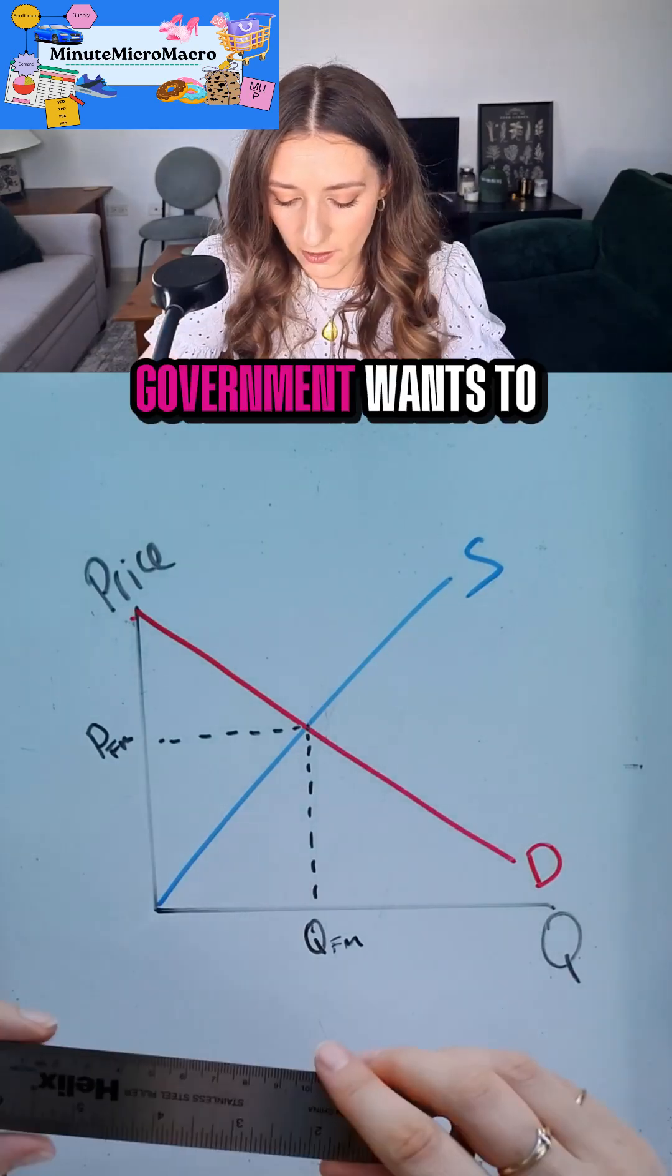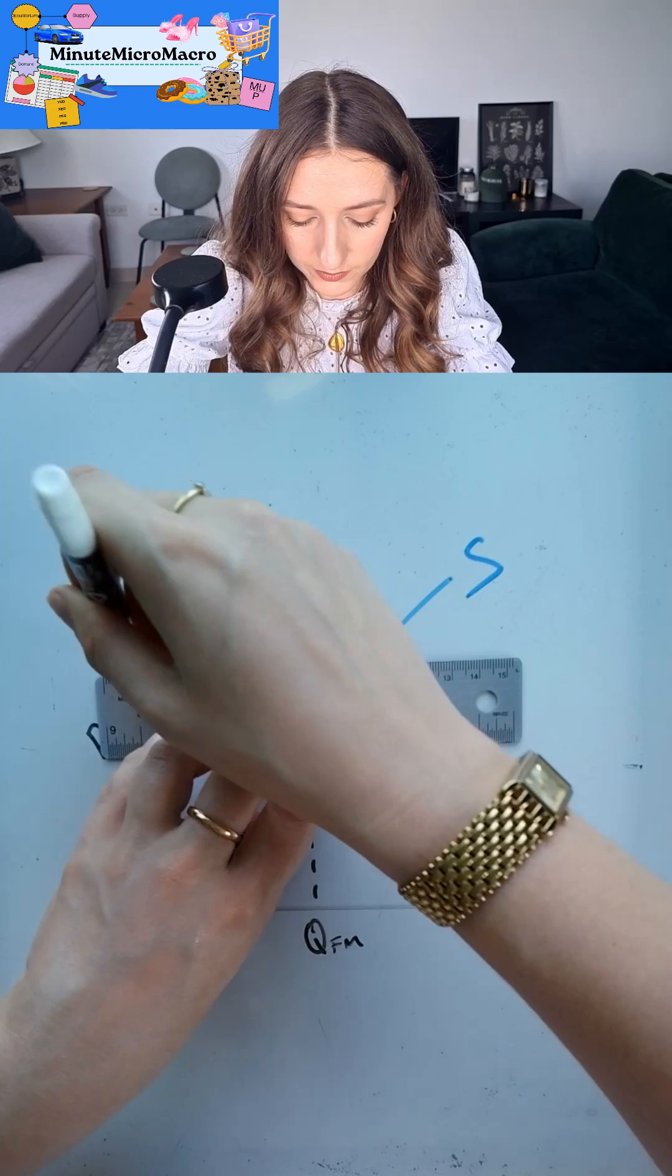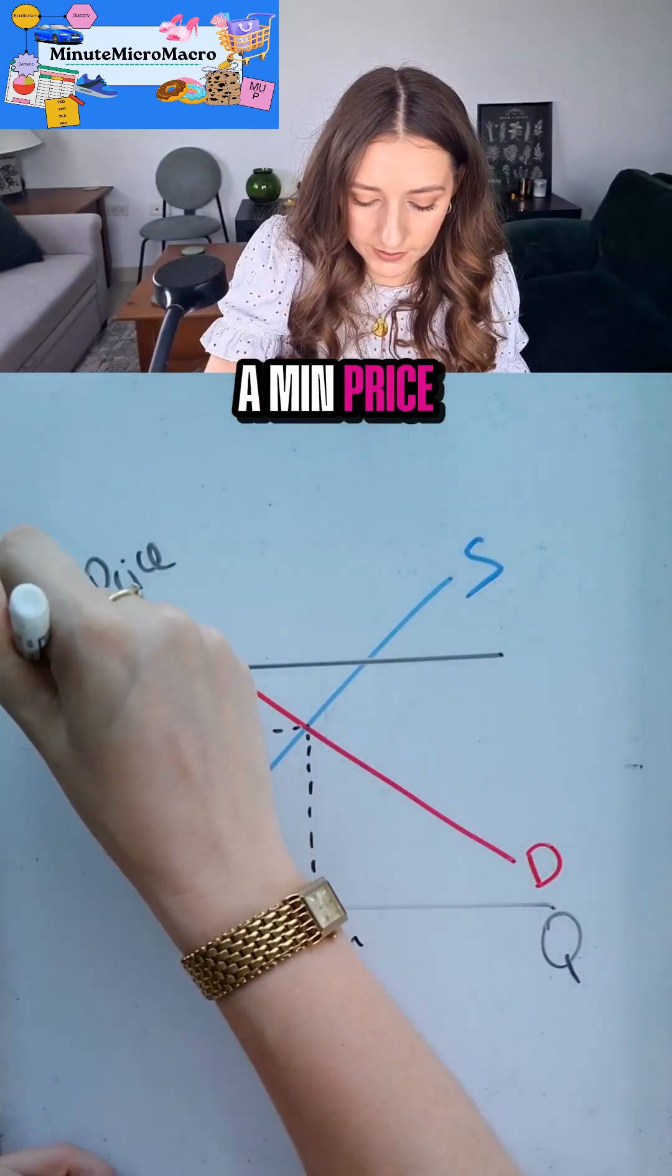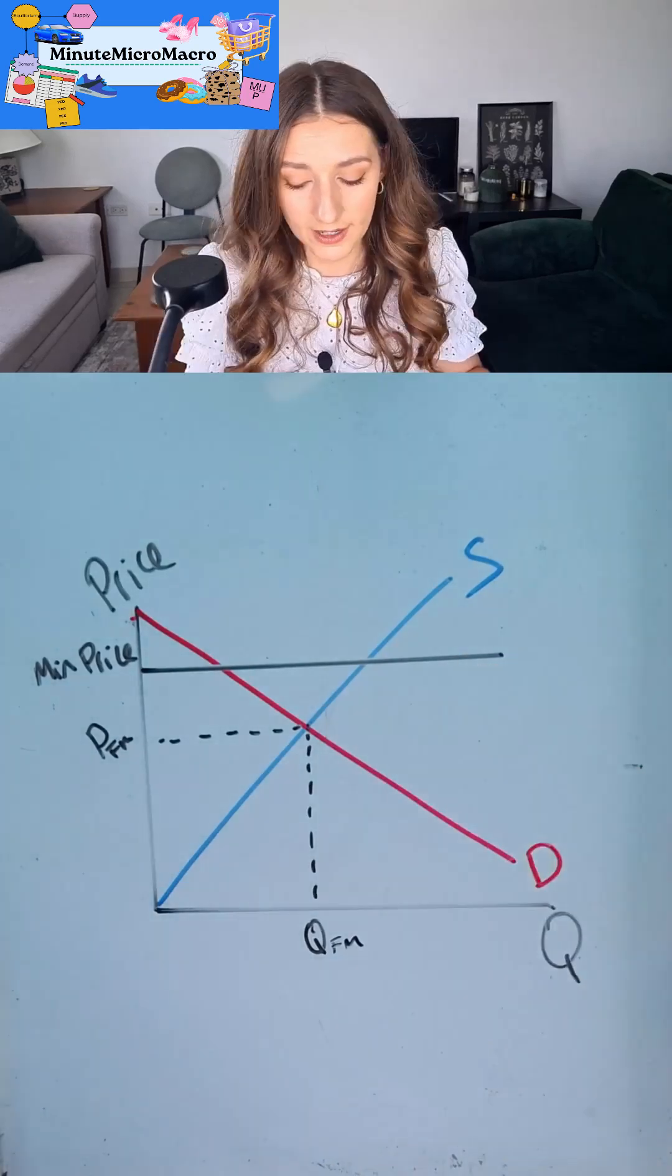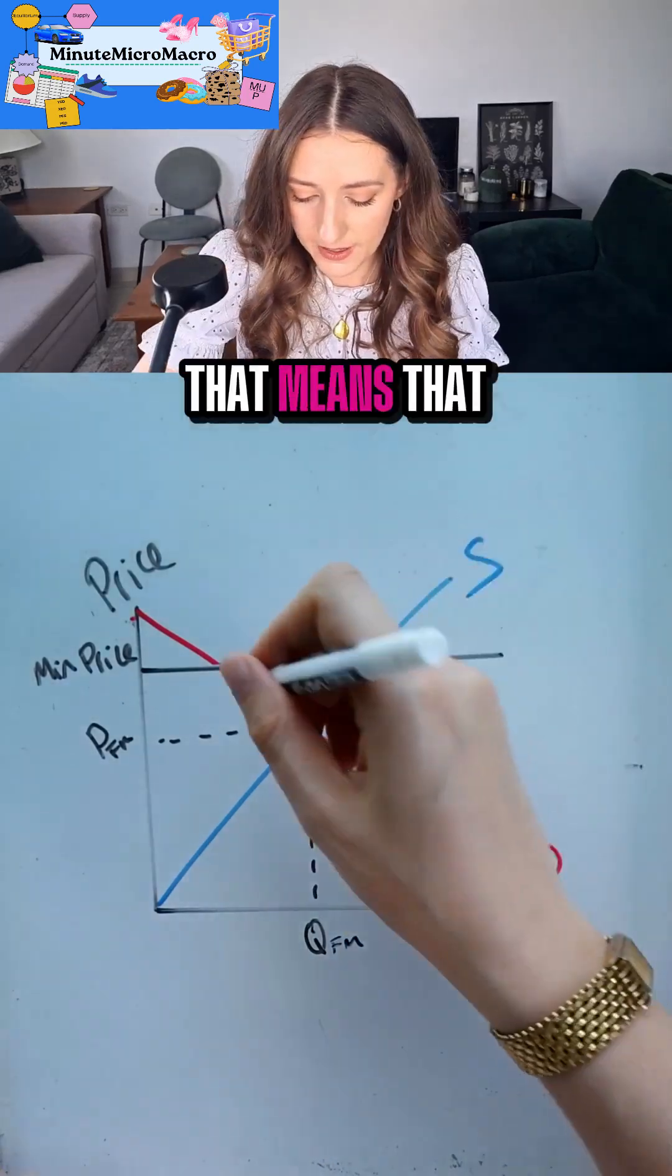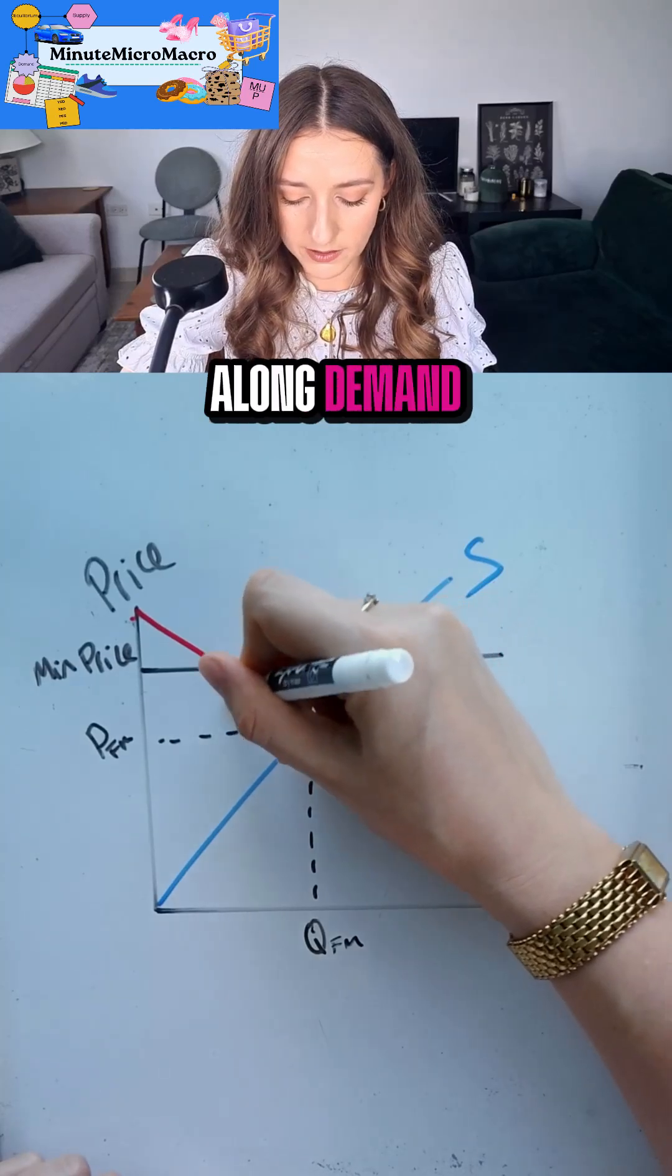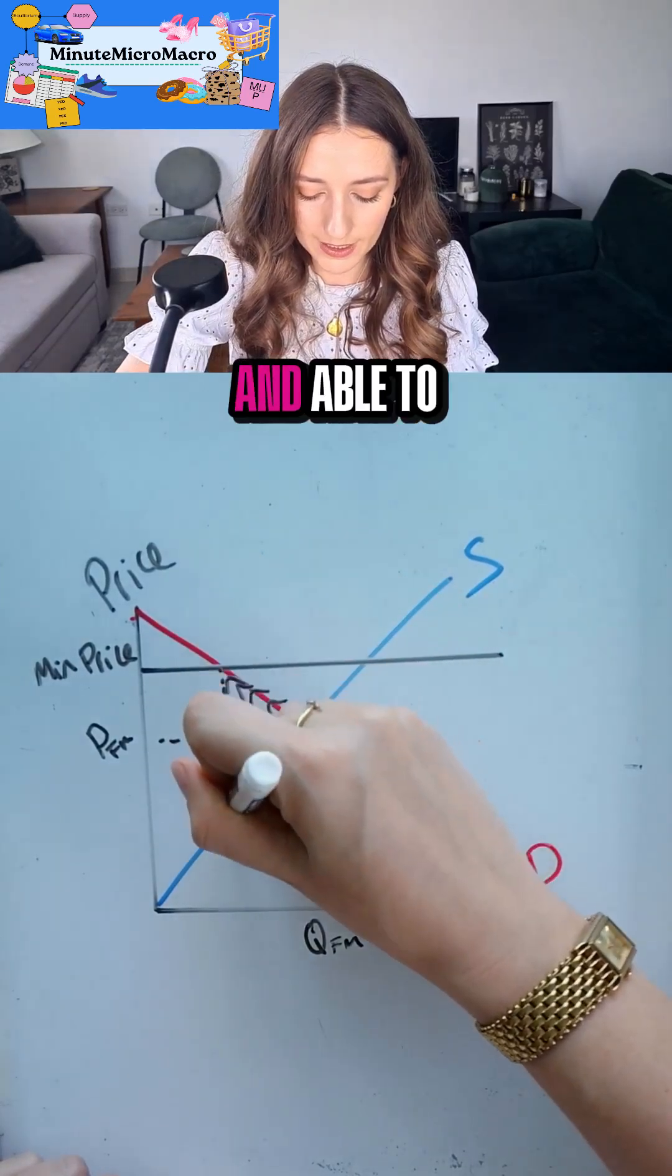But if the government wants to come in and set a price floor, we would have a min price above the equilibrium price if it's going to have an effect. That means that at this new higher price, there's going to be a contraction along demand. Fewer people will be willing and able to buy this product.